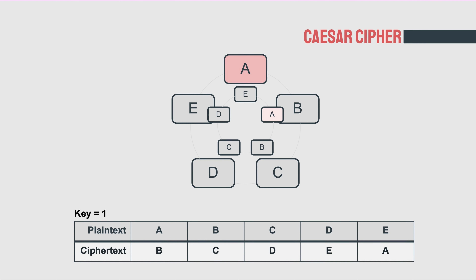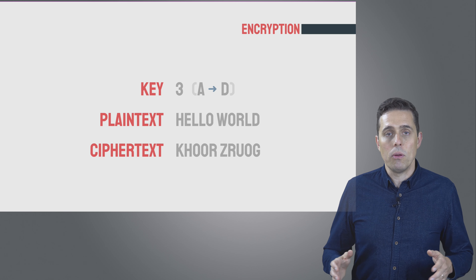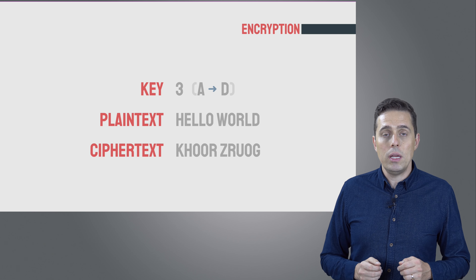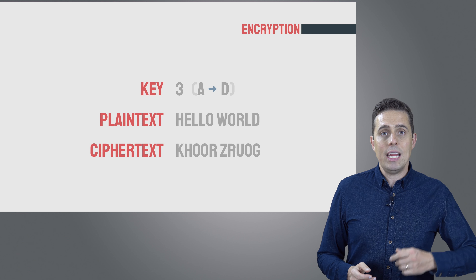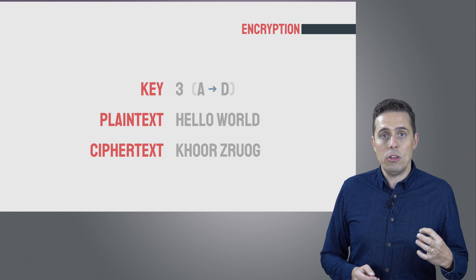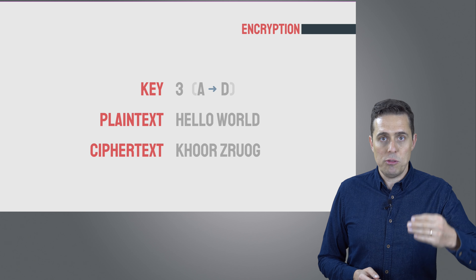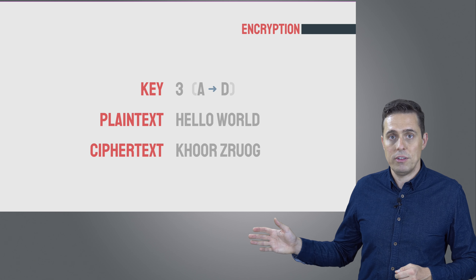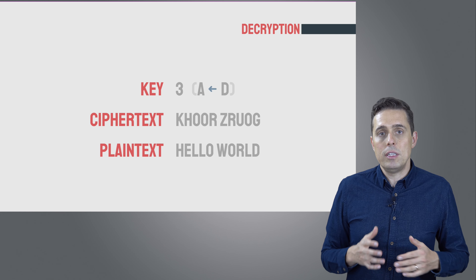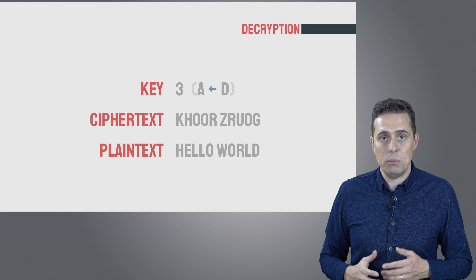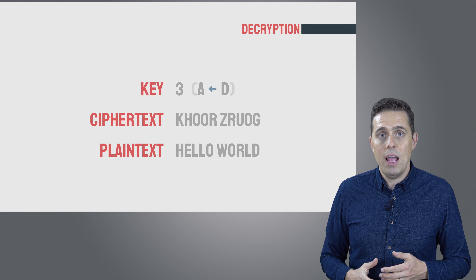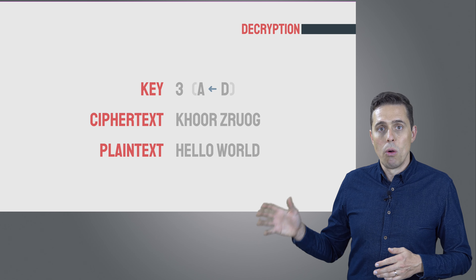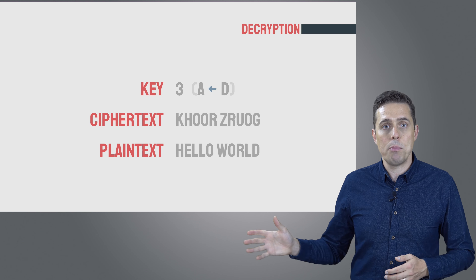With a key of 2, A maps to C, B maps to D, C maps to E, and so on. For example, if we took the message 'hello world' and used a key of 3, we take every letter in that message and substitute it with another letter three spaces forward in the alphabet, resulting in a ciphertext that looks like this. Similarly with decryption, we take every letter of the ciphertext and substitute it back with a plaintext letter three steps back in the alphabet, recovering our original message.